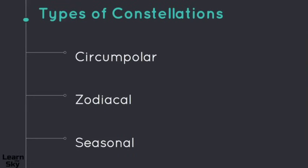There are three types of constellations that exist. We have circumpolar constellations, zodiacal constellations, and seasonal ones. Let's go through what each one of these means.